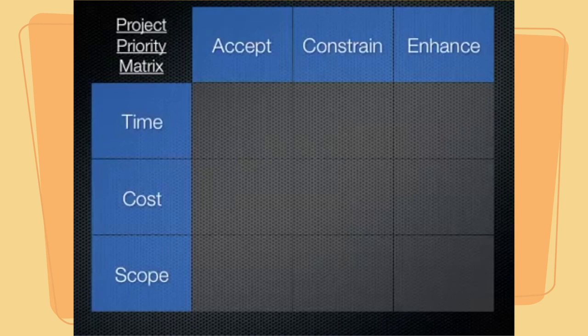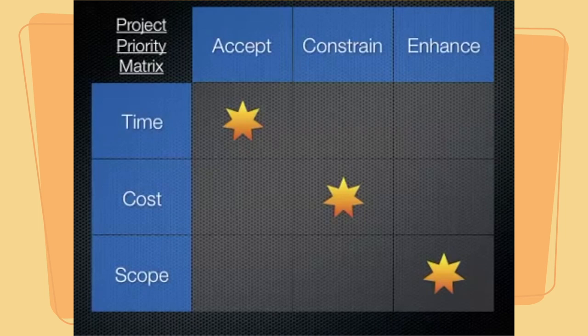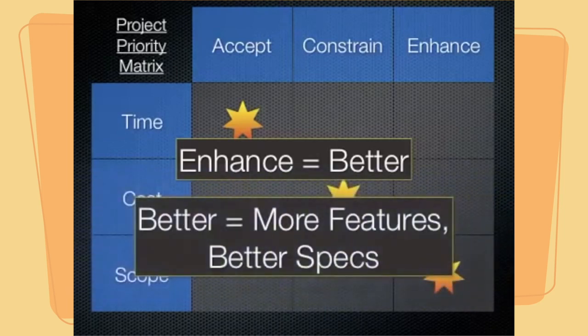Let's consider an example of a project in which the stakeholders are willing to accept a change in time — meaning a longer time to completion — but are not willing to accept changes in cost, so cost is constrained, and would like to enhance the scope if possible. In this case, the scope might be enhanced as long as it only leads to a longer time to completion, but not if it means an increase in cost. To enhance the scope means to make it better — adding more features, having better specifications, making this a better project in some aspect.